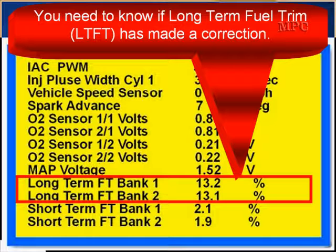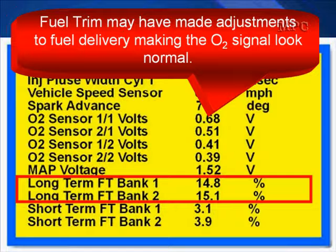But anything over 10%, we consider that needs diagnosing — whether it be minus, meaning it's running rich and the PCM is subtracting fuel, or plus, meaning it's running lean and the PCM is adding fuel. Not everyone agrees with our strict specifications for long-term fuel trim; you can use what you use or you can use ours. Fuel trim may make adjustments for fuel delivery and it's all based off the oxygen sensor signal. In this case, you can see we have fuel trims of 14% and 15%.